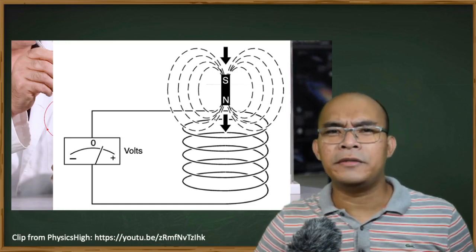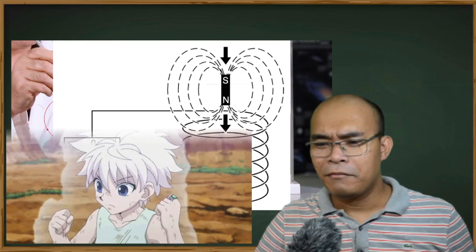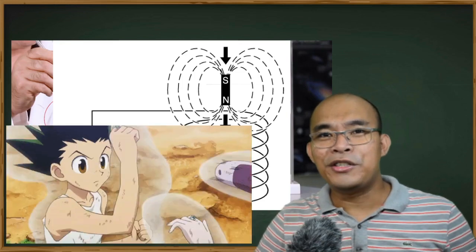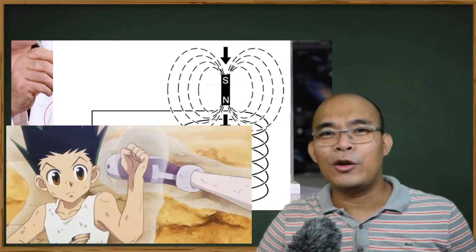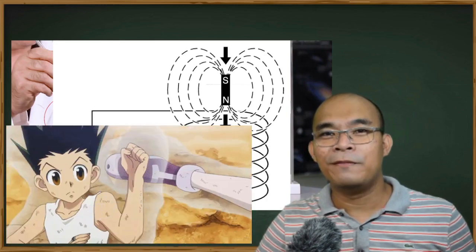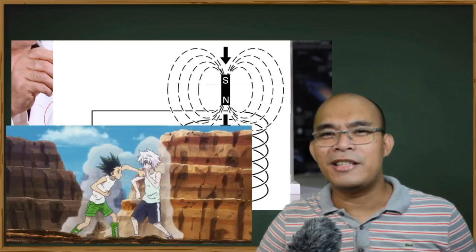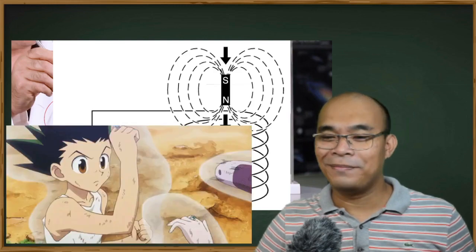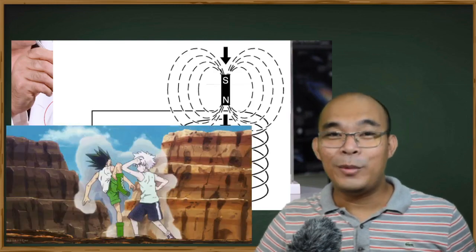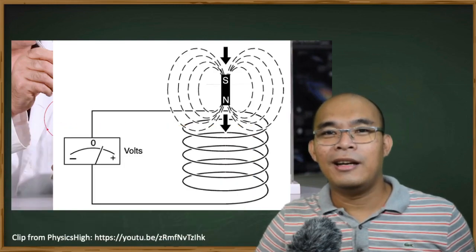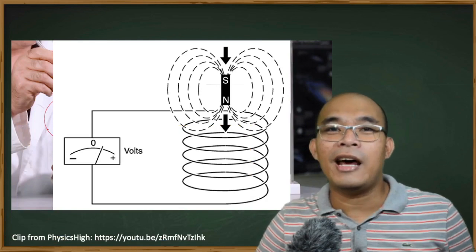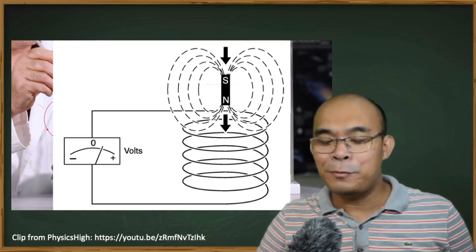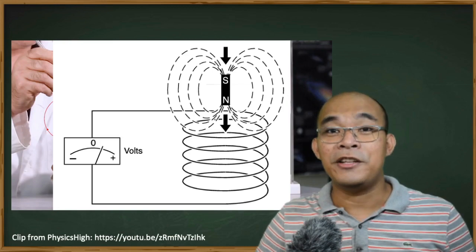If you are a fan of Hunter x Hunter, this is similar to the concept of Nen — the aura surrounding Gon and Killua. But in this experiment, it is the area around the magnet, represented by the broken lines.